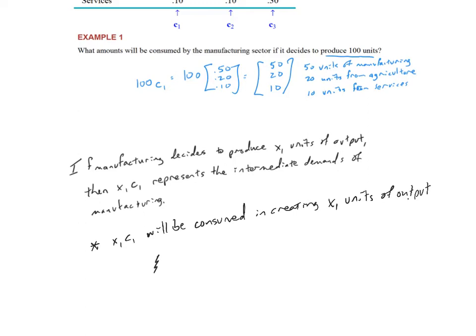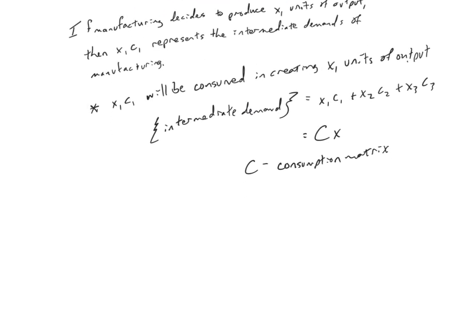And so the way that we think about this, the intermediate demand is equal to x1 c1 plus x2 c2 plus x3 c3, which we are just going to label as capital C times x, where capital C is called our consumption matrix. Consumption matrix because it's what we're consuming in order to produce something. Capital C is our consumption matrix.